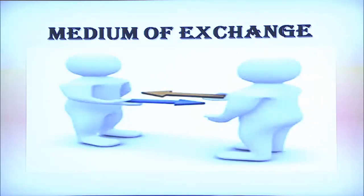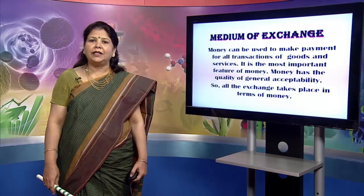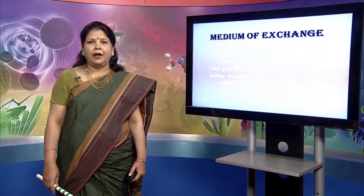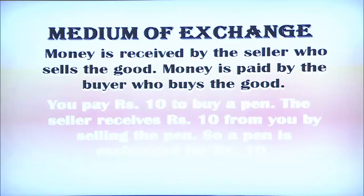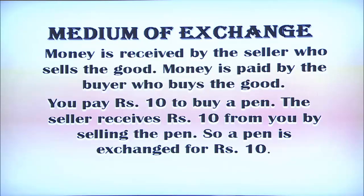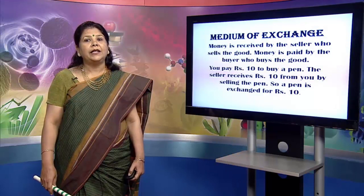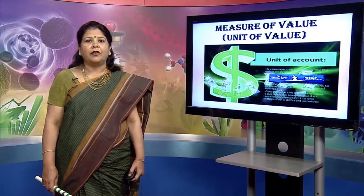The first function is money as a medium of exchange. Money can be used to make payment for all transactions of goods and services — it is the most important feature of money. Money has the quality of general acceptability, so all exchange takes place in terms of money. For example, you pay rupees 10 to buy a pen; the seller receives rupees 10 from you — a pen is exchanged for rupees 10.